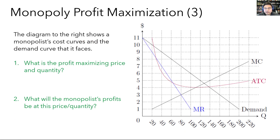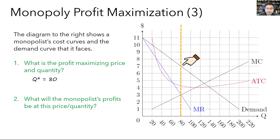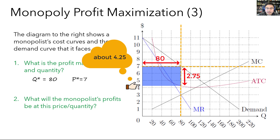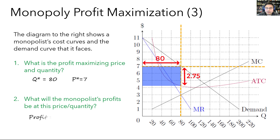Let's apply what we learned to an example. The diagram shows a monopolist's cost curves and the demand curve it faces from consumers in the market. Profit is maximized where MR equals MC, so the profit maximizing quantity is 80, and the price is up on the demand curve at 7. The monopolist's profit is this rectangle — the width is 80 and the height is approximately 2.75, since the ATC at the profit maximizing quantity is approximately 4.25. So profit is 2.75 times 80, which is 220.